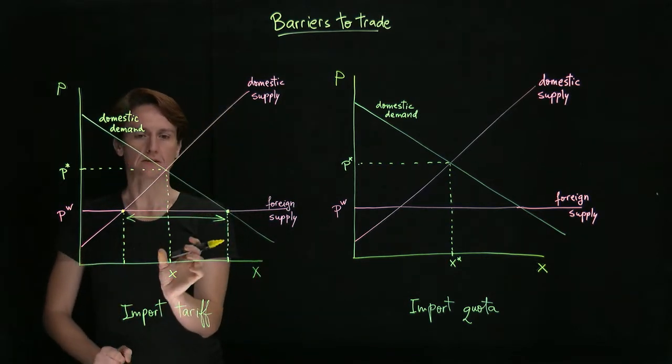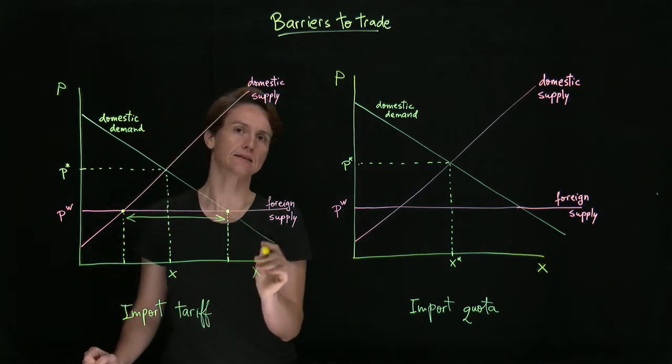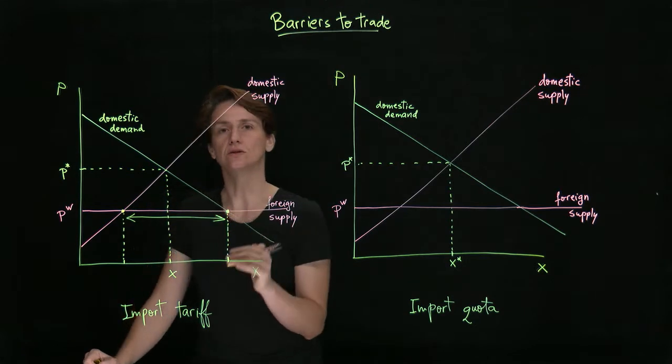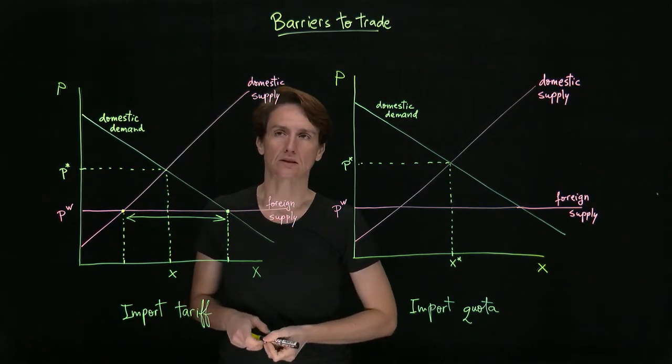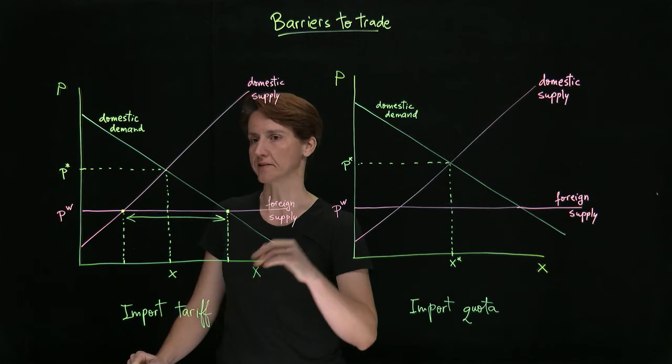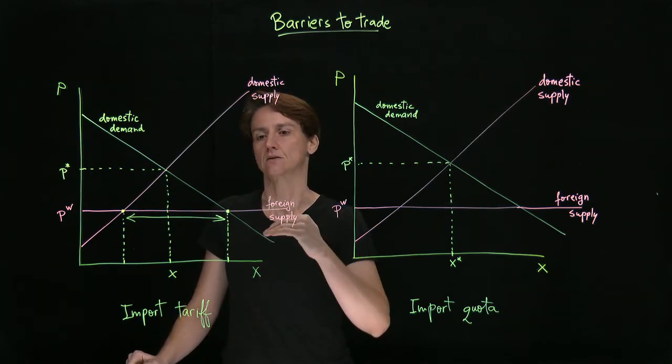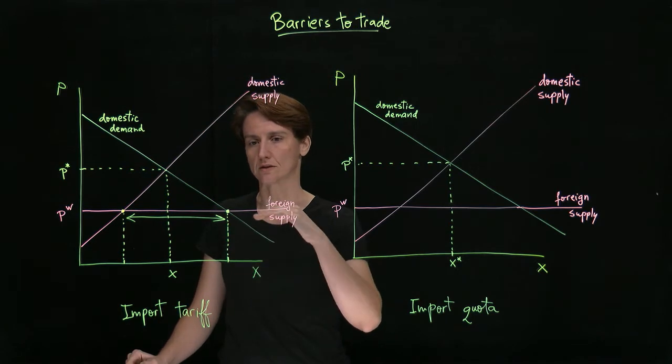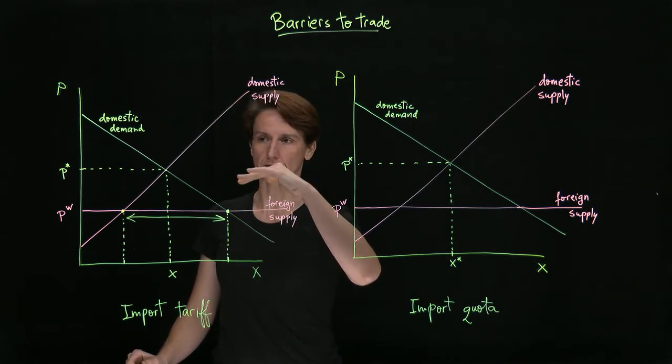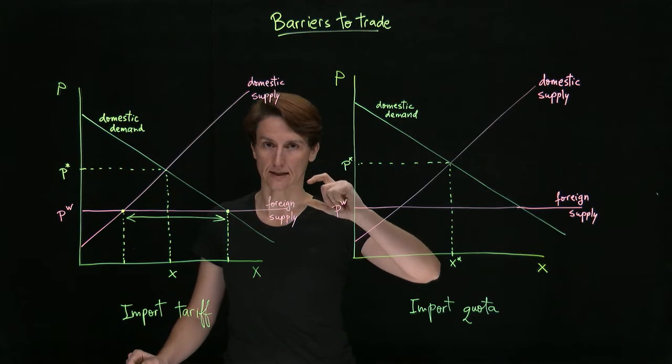What is a tariff? A tariff is a tax that applies only to foreign goods. So remember, we can think of a tax as an increase in the marginal cost of production. So what that meant usually was that a tax shifted the supply curve up by the amount of the tax.